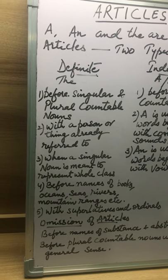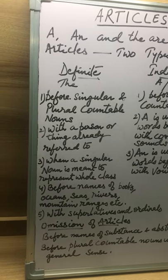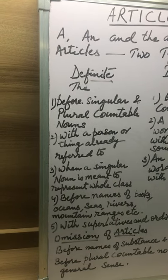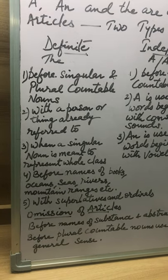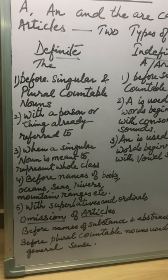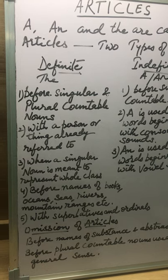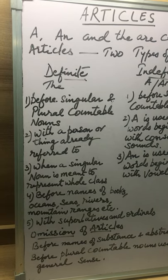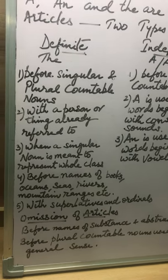The definite article 'the' is used with a person or thing which has already been referred to — that is, when it is clear from the context which one we mean. For example, 'the book you want is out of print' — which book? The book you want. 'Let's go to the park' — the park has already been mentioned before. 'The girl cried' — the girl already talked about.